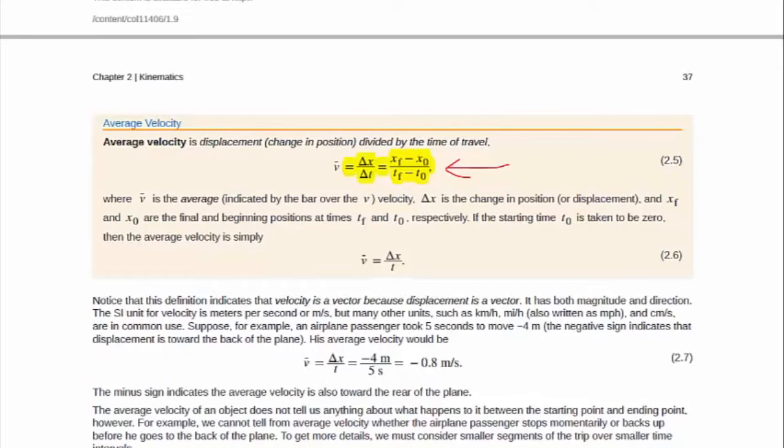If you think back to the chapter 1 reading guide, I mentioned that physics is ideas that we happen to express mathematically. This equation here is the idea of velocity represented in a mathematical form. It's important for you to understand both the word definition given up here and the mathematical definition given here and understand how they connect to each other.